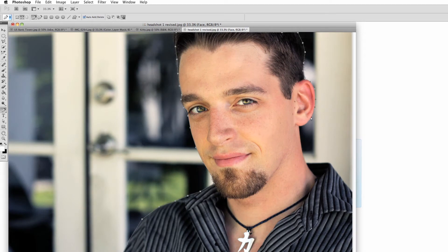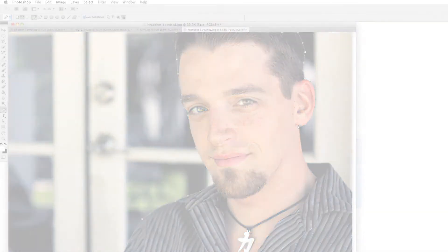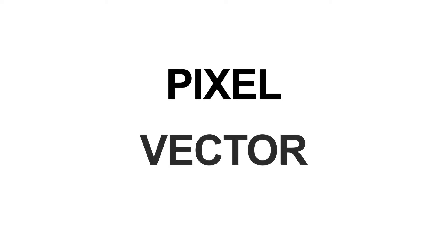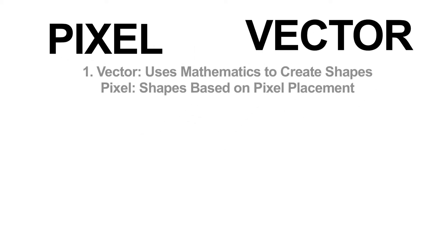There are two types of masks — one is pixel-based, the other is vector-based. What's the difference? Vector-based makes use of mathematical points and lines to create shapes, while pixel-based masks create shapes based on pixel placement in your image.